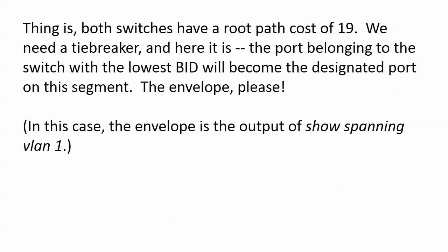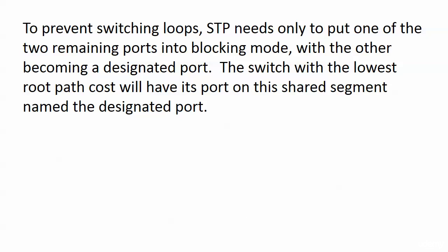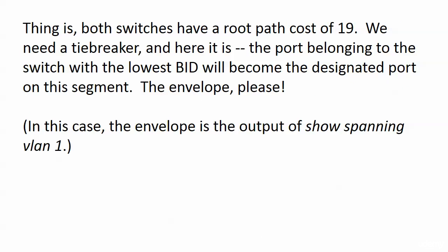The switch with the lowest root path cost will have its port on the shared segment named the designated port. But both switches have a root path cost of 19. Switch One originates a BPDU with RPC zero, which comes in on Fast Ethernet Three on Switch Three with a port cost of 19, giving a root path cost of 19. Same thing for Switch Two — it gets the BPDU on Fast Ethernet One, adds 19, and also has a cost of 19. So we need a tiebreaker: the port belonging to the switch with the lowest BID will become the designated port on this segment. What we need is the output of show spanning-tree VLAN 1.